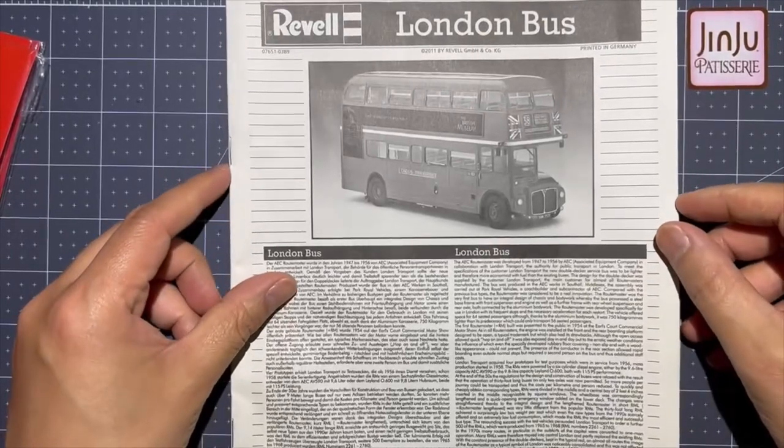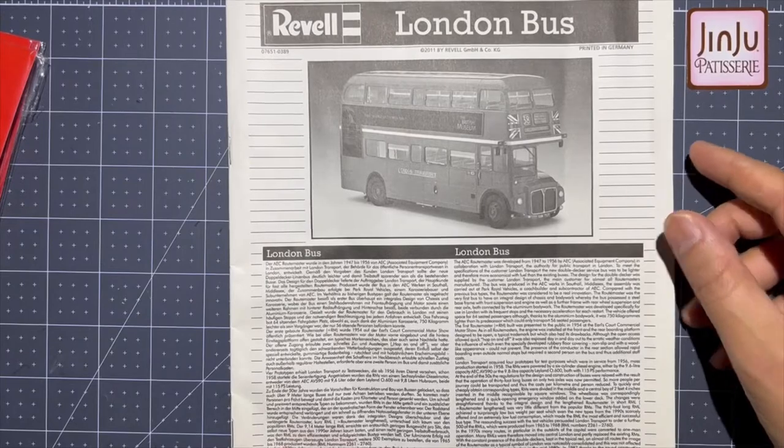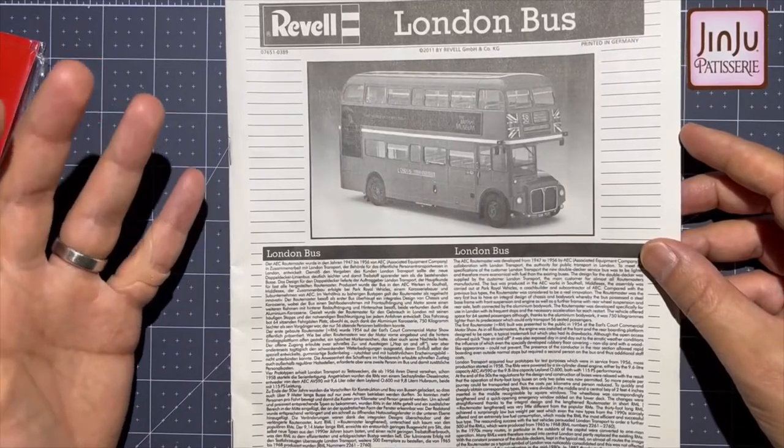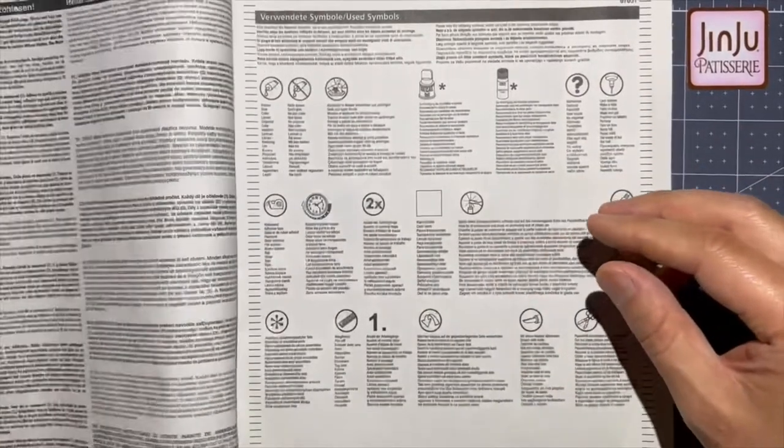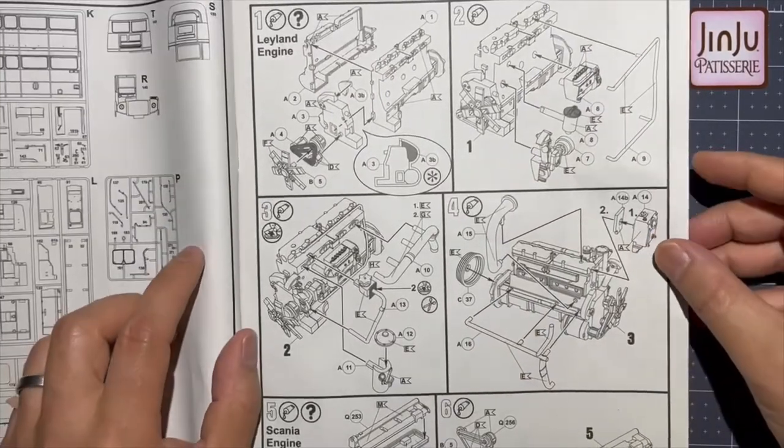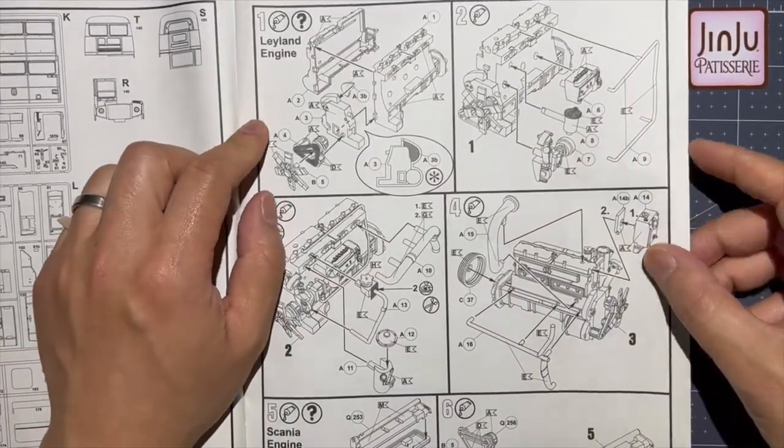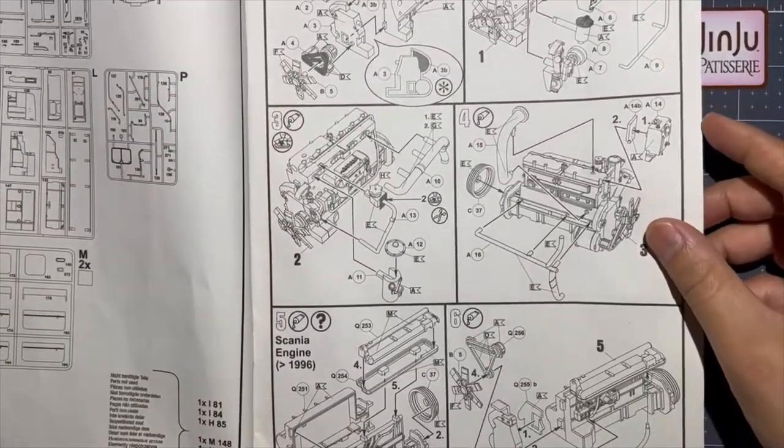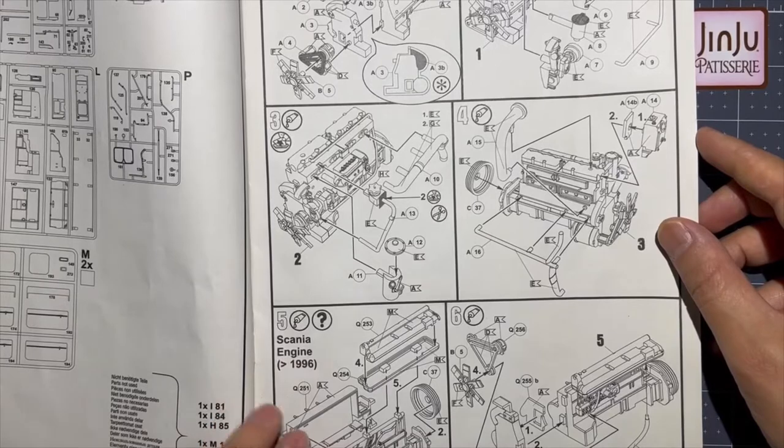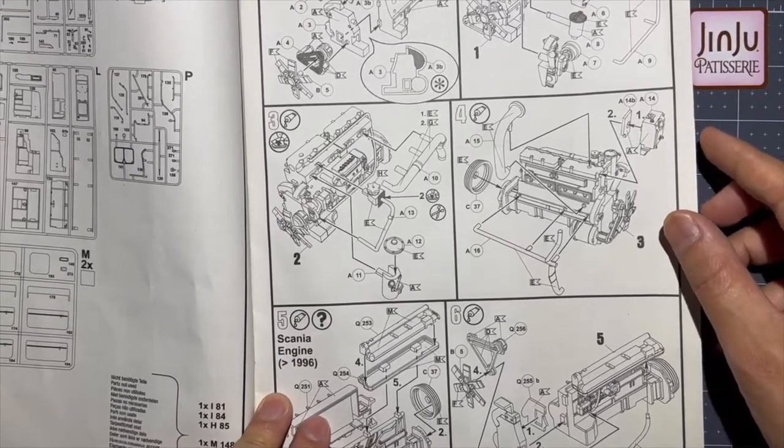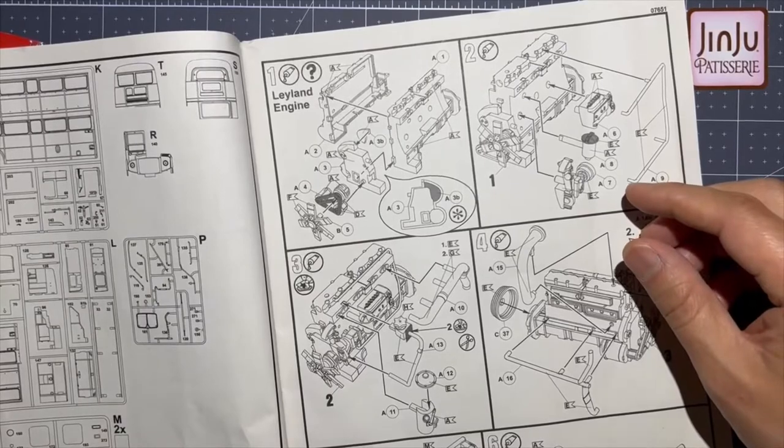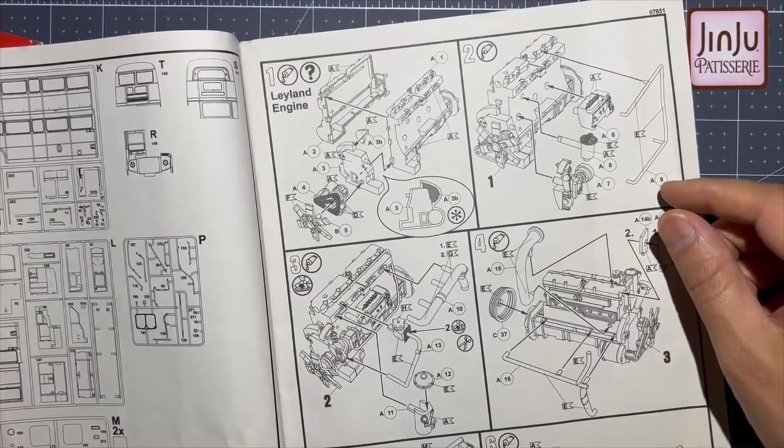I haven't done a Revell model in a long time, but that's okay. All models are the same, just different instructions. Except I don't think I've ever done a Revell model that is from Revell Germany. So I guess the first decision I have to make is what engine I want to pick. I have the Leland engine here or you can get this other engine, the Scania. This engine looks like it's from after 1996 and I'm probably going to be leaning more towards doing the Leland engine. You know, it's an old school bus, let's try to keep it with an old school engine.